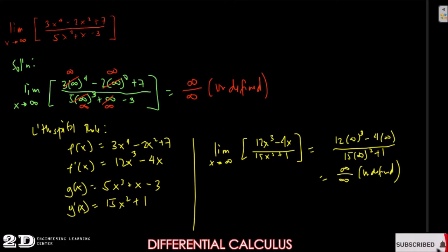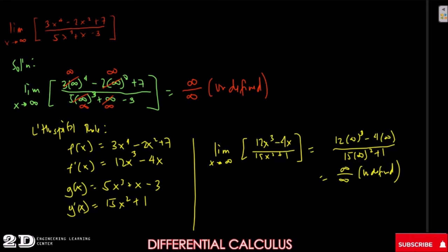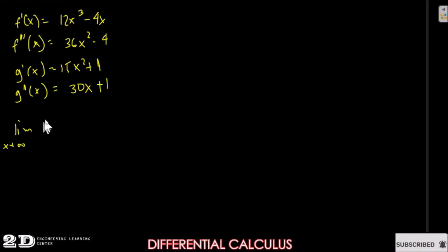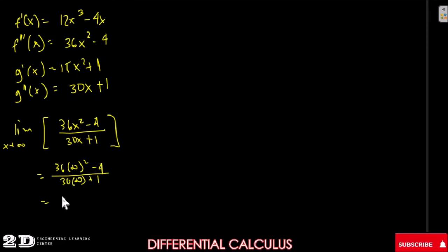From g'(x) = 15x squared plus 1, the second derivative g''(x) = 30x plus 1. Applying L'Hôpital's Rule again, we evaluate the limit of (36x squared minus 4) over (30x plus 1) as x approaches infinity. Substituting gives 36 times infinity squared minus 4, over 30 times infinity plus 1, which is still infinity over infinity — still undefined.